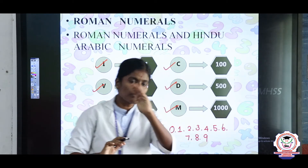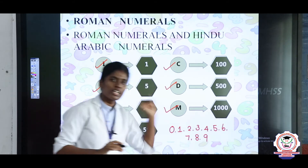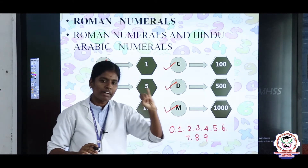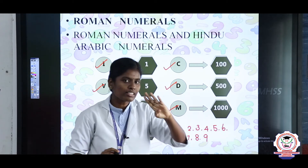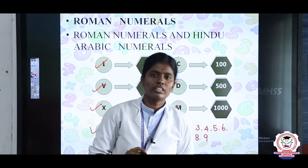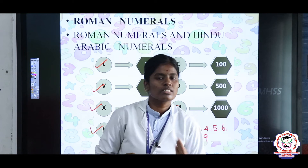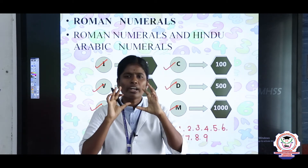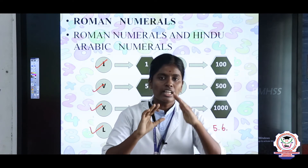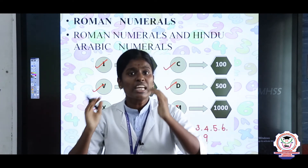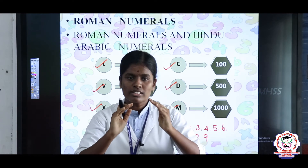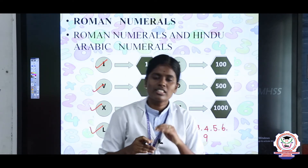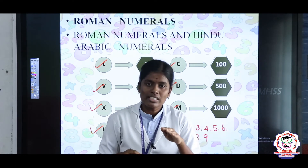But in the Hindu-Arabic numeration system, we use 10 symbols: 0, 1, 2, 3, 4, 5, 6, 7, 8. In the Roman numeration system, there is no zero — that is one important difference. Also, the Roman numeration system does not use the concept of place value.